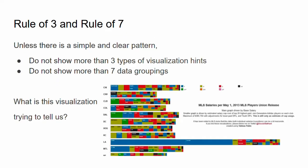In general, there is a rule of seven and a rule of three. The rule of three means don't show more than three types of visualization characteristics, such as color, size, position, or area. The rule of seven means don't show more than seven data groupings unless there is a simple and clear pattern. If there's a very simple and clear pattern, you can show more than seven groupings, but I still wouldn't recommend using more than three types of visualization characteristics, because with more than three, the pattern will not be simple.